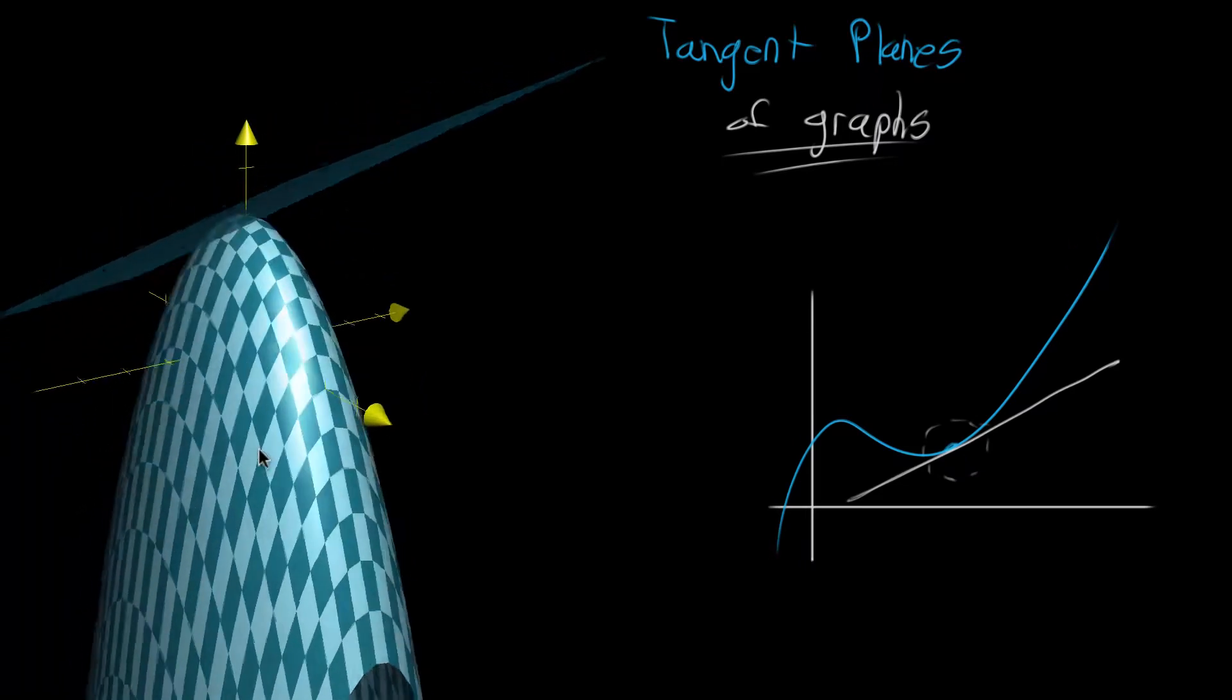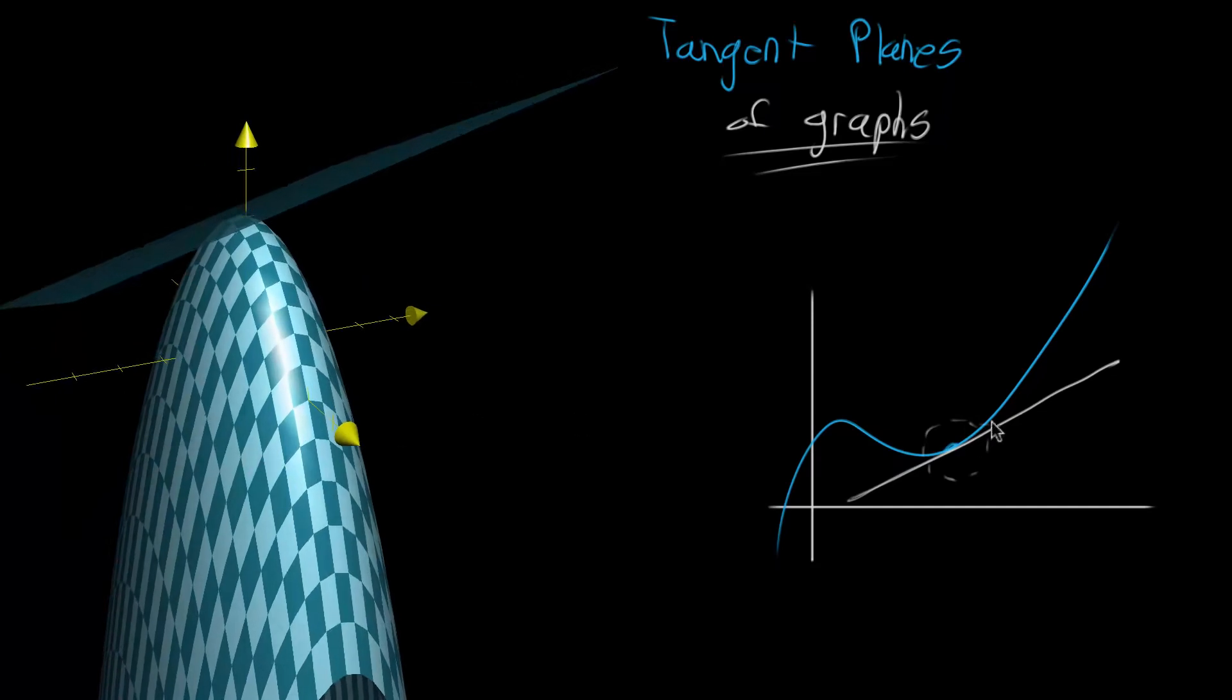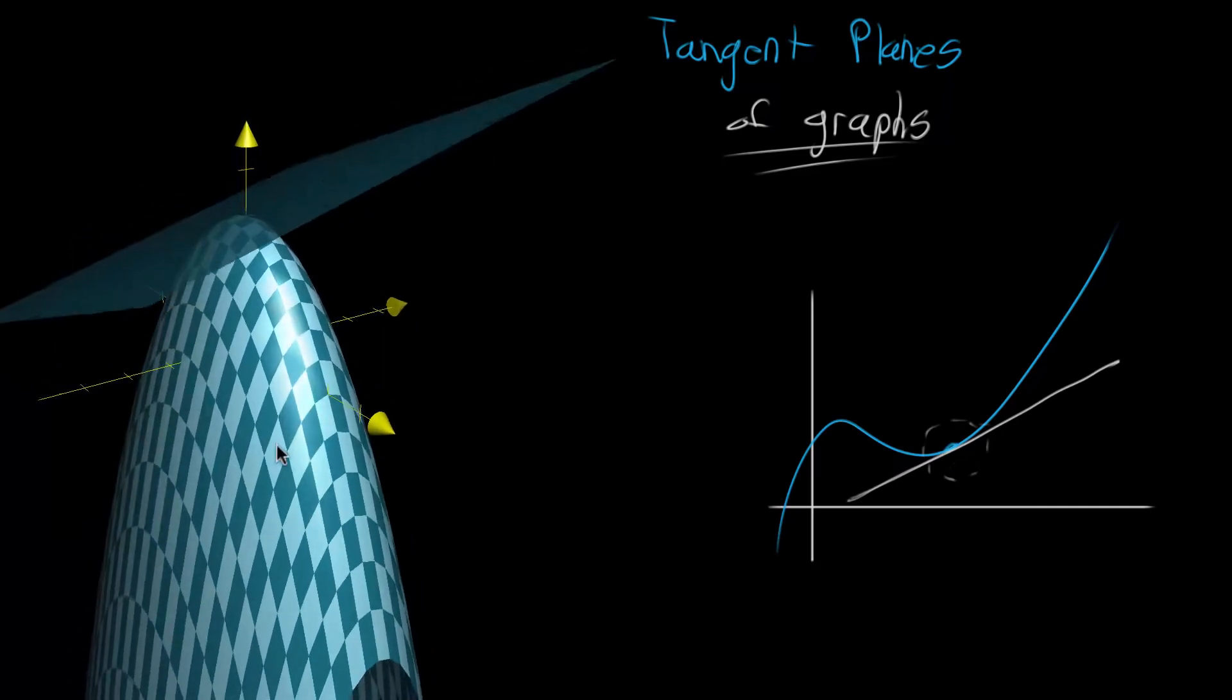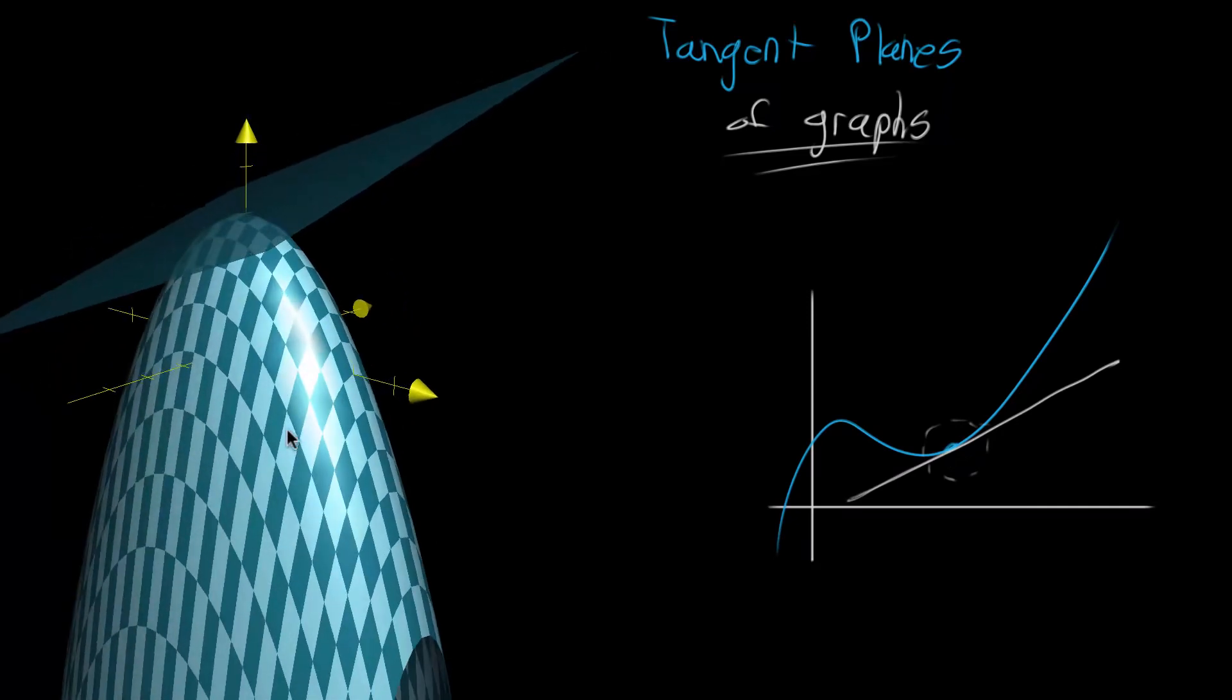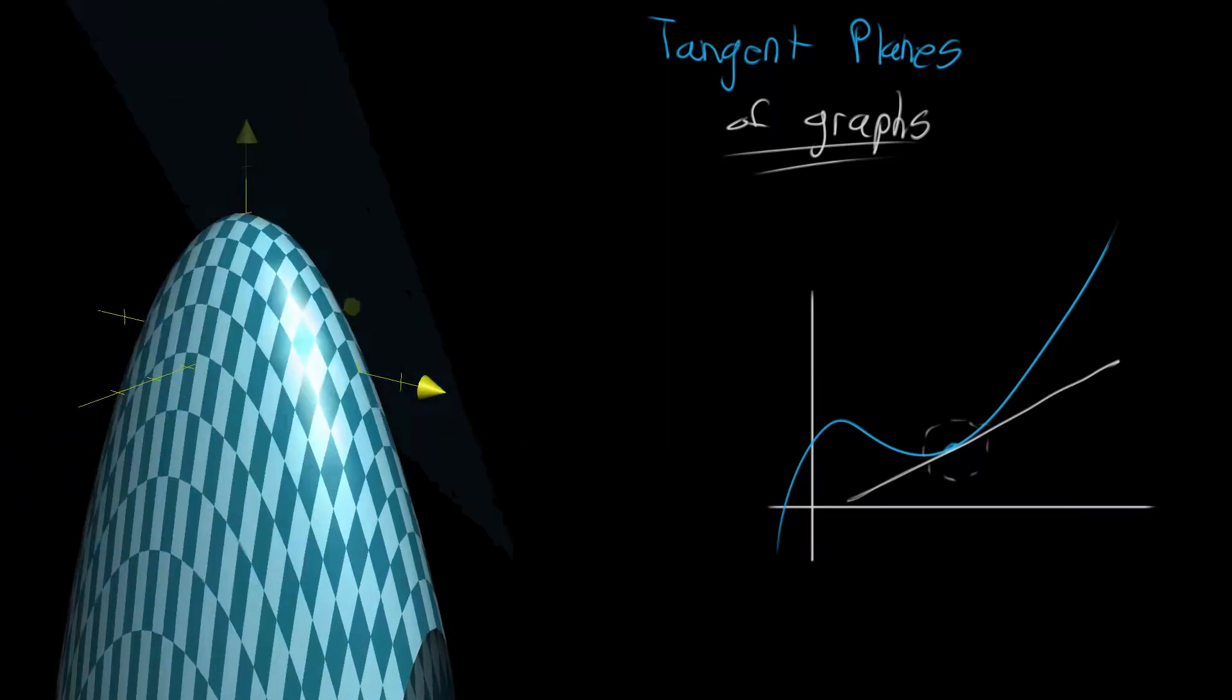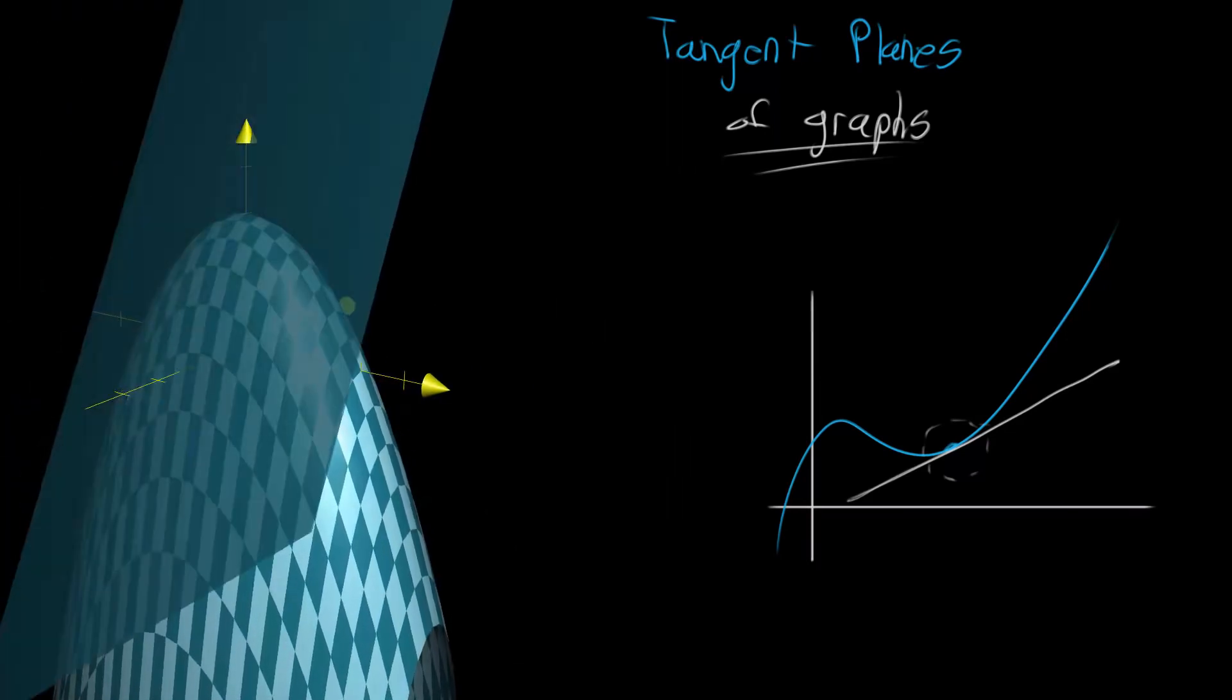So this is something where it's just going to barely be kissing the graph in the same way that the tangent line just barely kisses the function graph in the one dimensional circumstance and it could be at various different points rather than just being at that point. You could kind of move it around and say that okay, it'll just barely be kissing the graph of this function but at different points.